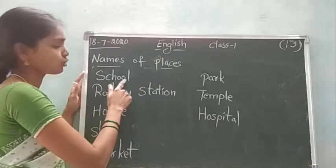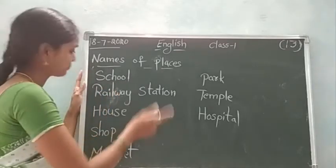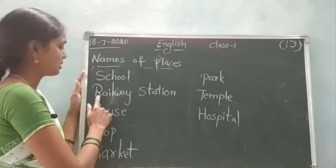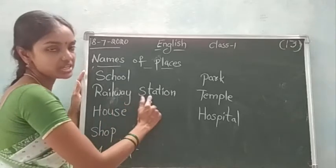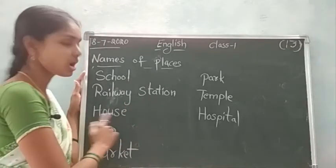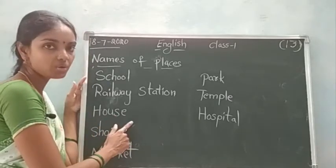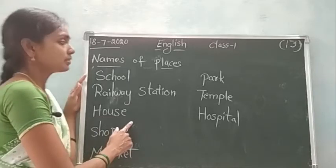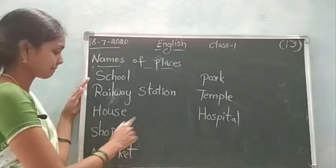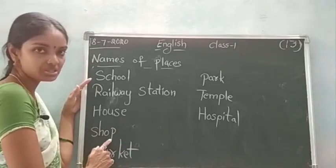S-C-H-O-O-L, school. Railway station, R-A-I-L-W-A-Y station, S-T-A-T-I-O-N, station. Next: house, H-O-U-S-E, house. All of you write these words in your book, children. All of you see and say. Shop, S-H-O-P, shop.